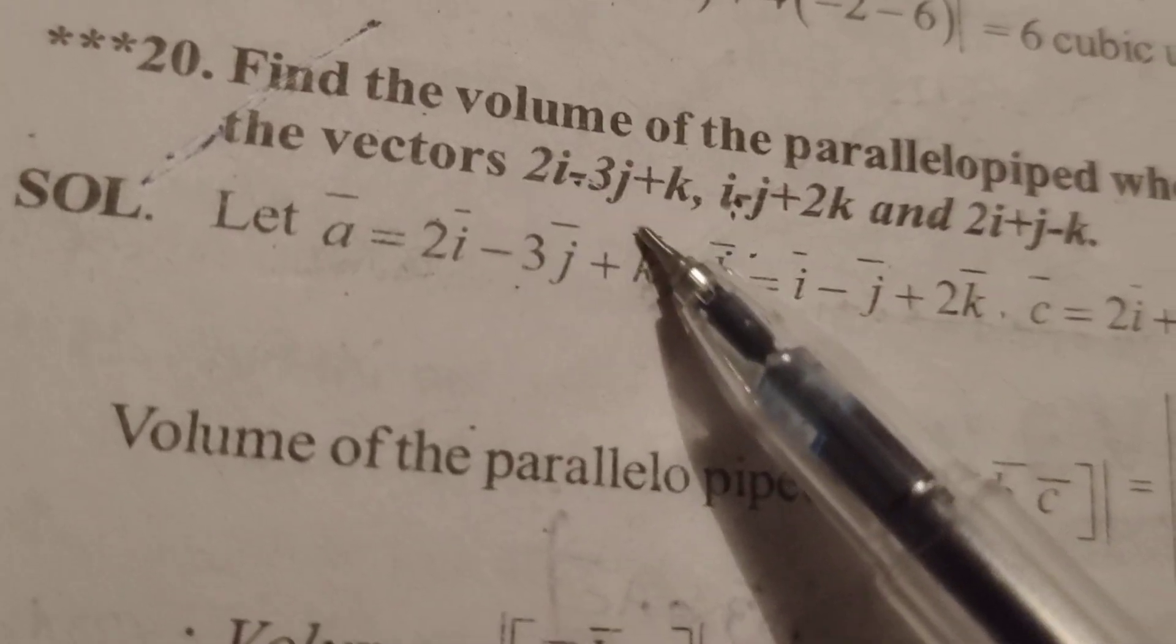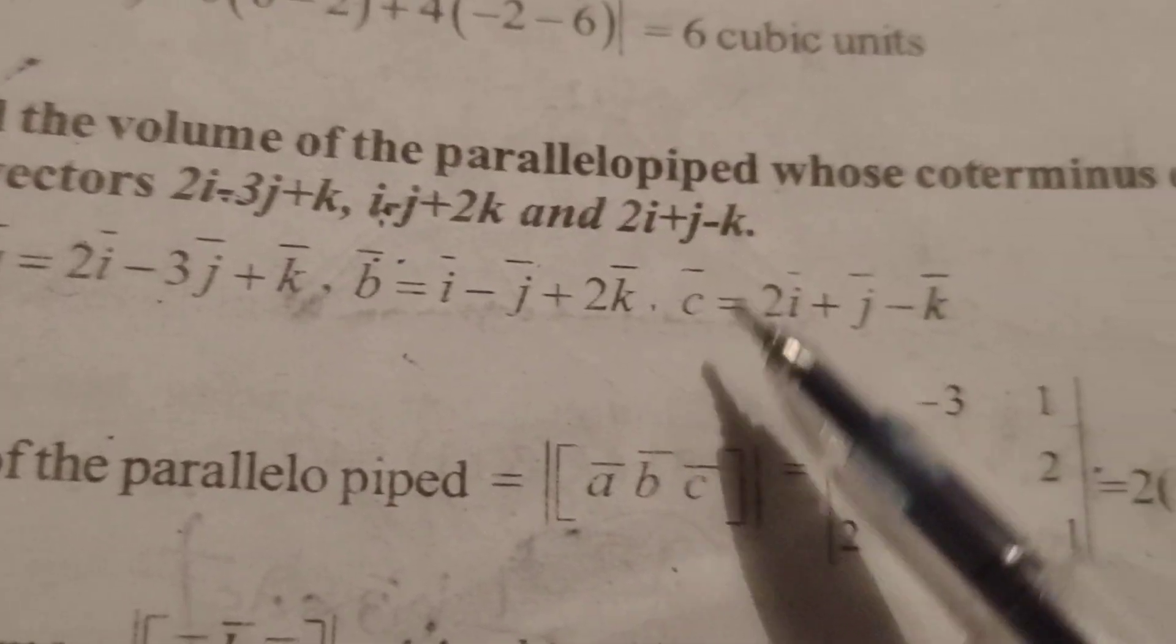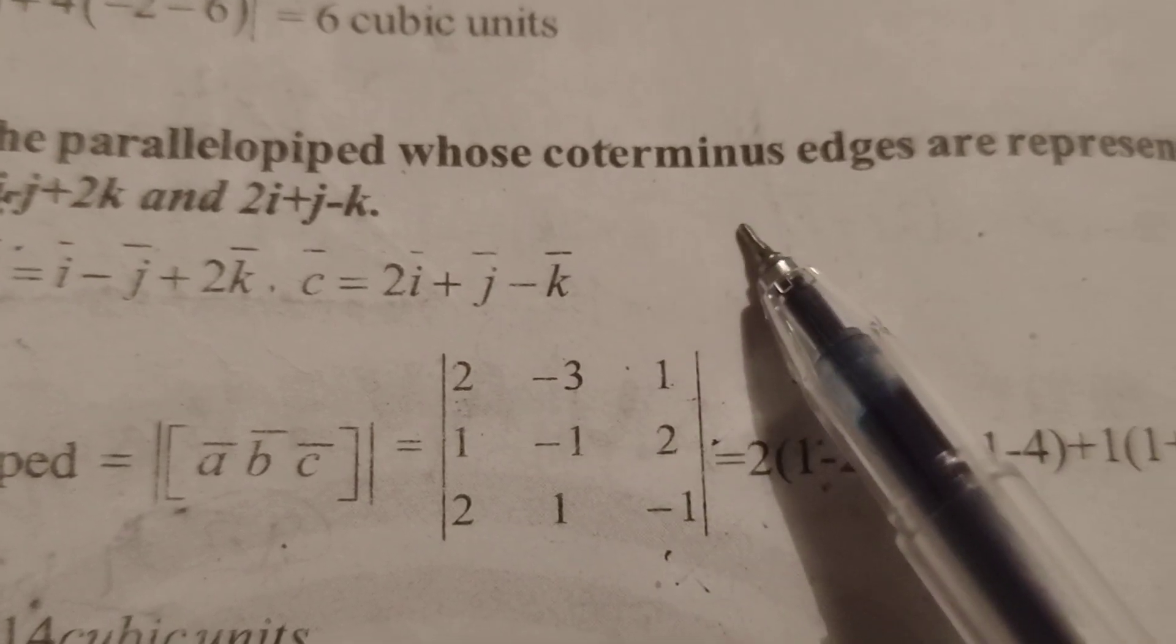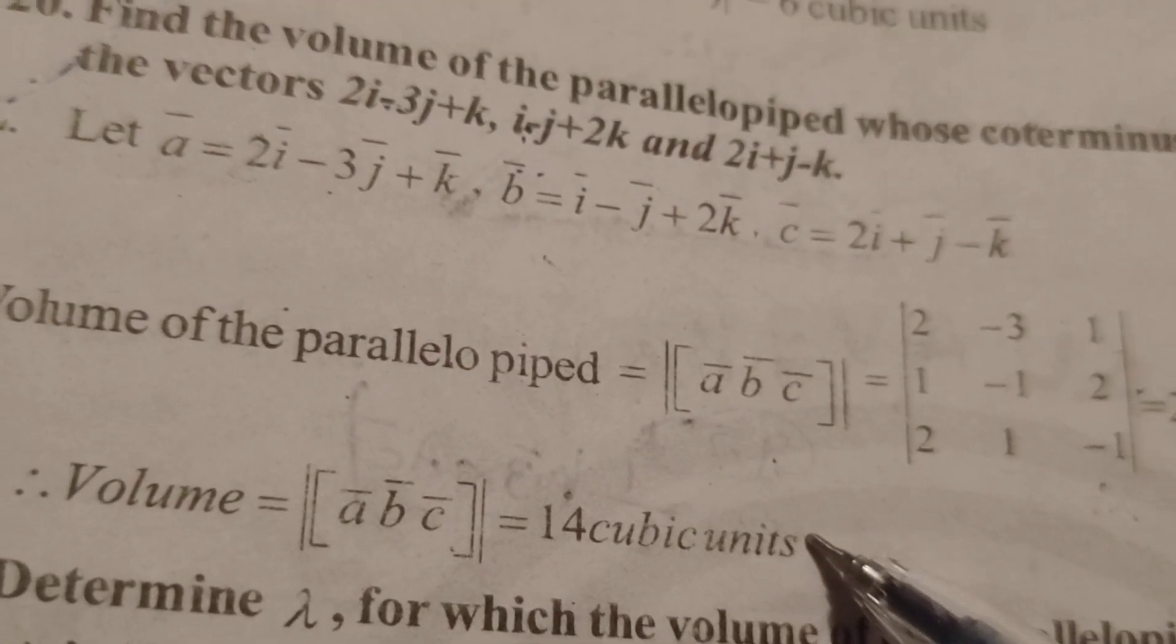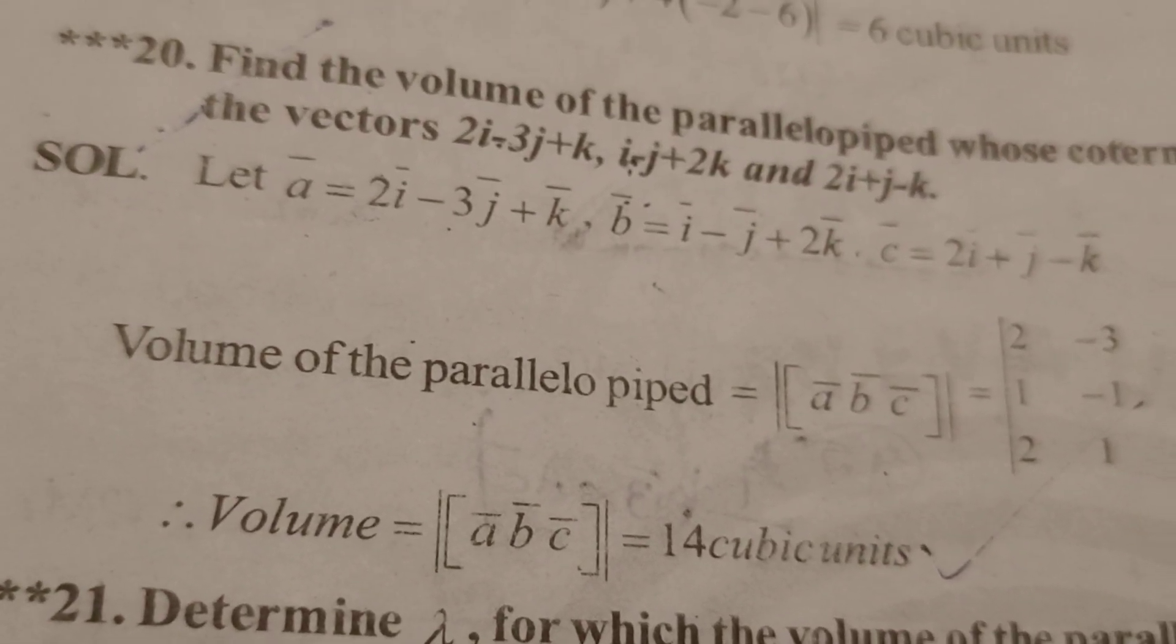Here, to find out the volume of the parallelepiped given 3 vectors, it is 14 cubic units. Thank you.